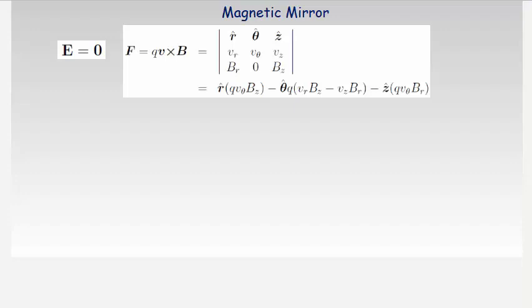These conditions allow us to take the cross product V cross B in cylindrical coordinates, which is done by carrying out this determinant, where the unit vectors are along r, θ, and z. We are interested in the z-component of the force because reflection or transmission along the z-axis will depend on it.